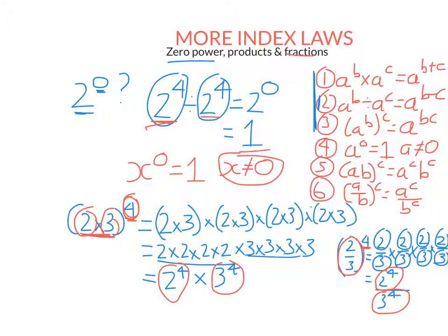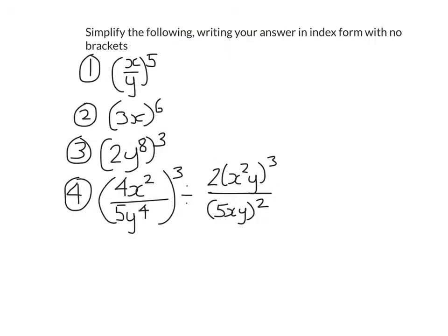So those are the six index laws we need to know, and we'll do questions involving these three new laws. We're simplifying and writing in index form — so something to the power of something, with no brackets. The first question uses the fraction power law: raise the top to the power and the bottom to the power. The second question involves a product in brackets raised to a power. We need to raise the three to the power of six as well to get 729 — people always forget that. You don't just raise x to the power of six; you also raise the three to the power of six, giving 729x to the power of six.